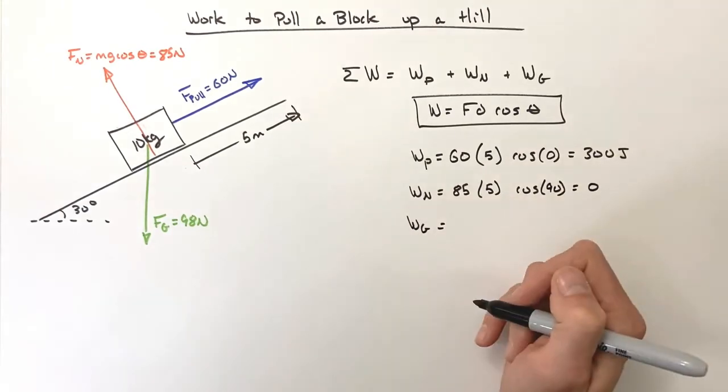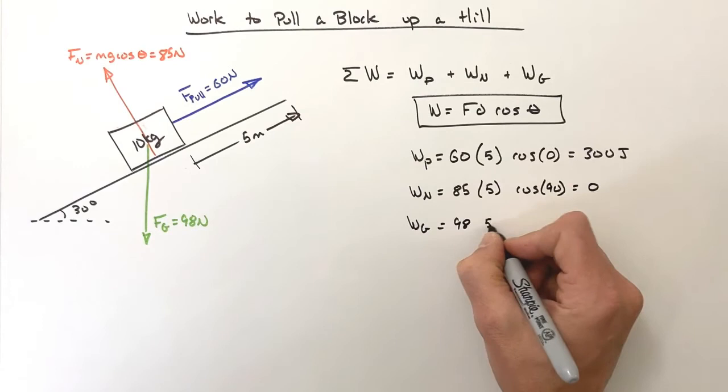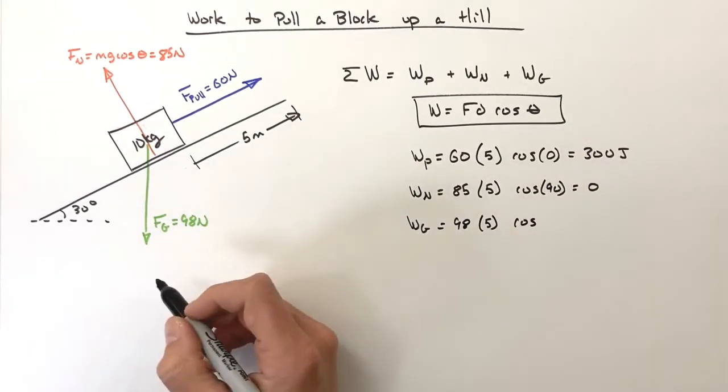Last we have the work by gravity. Now the work by gravity we know is 98 newtons, the displacement is 5 meters, and now we need to worry about the angle between them.